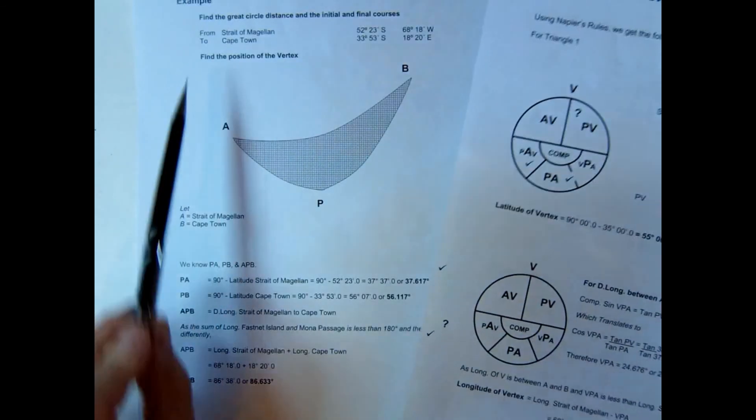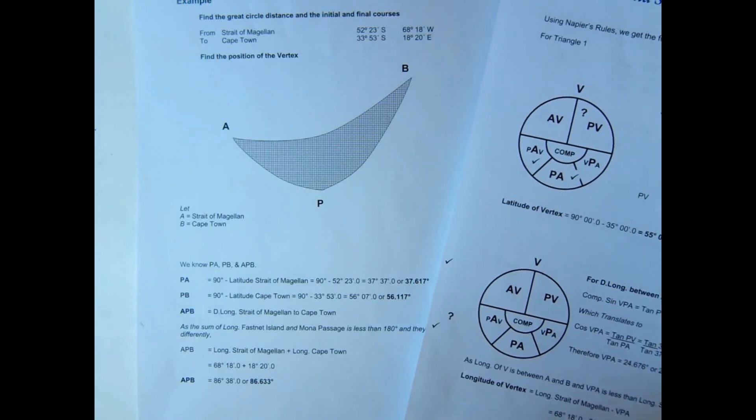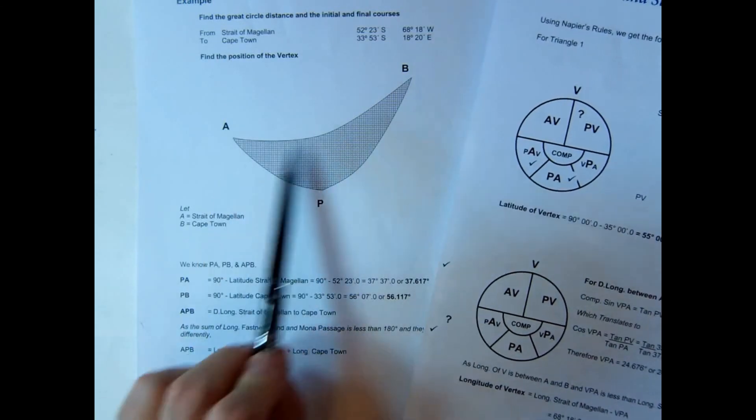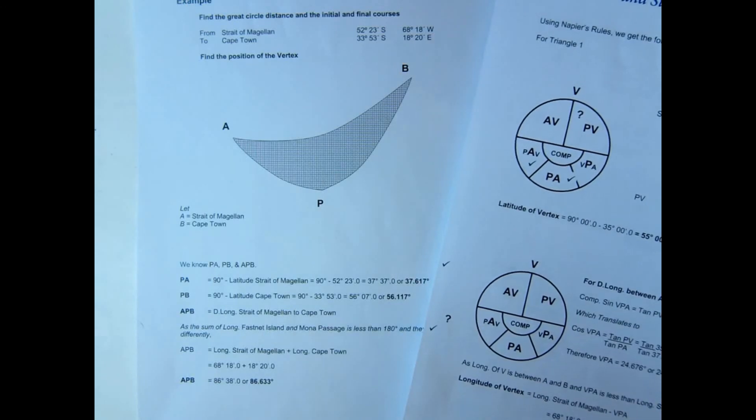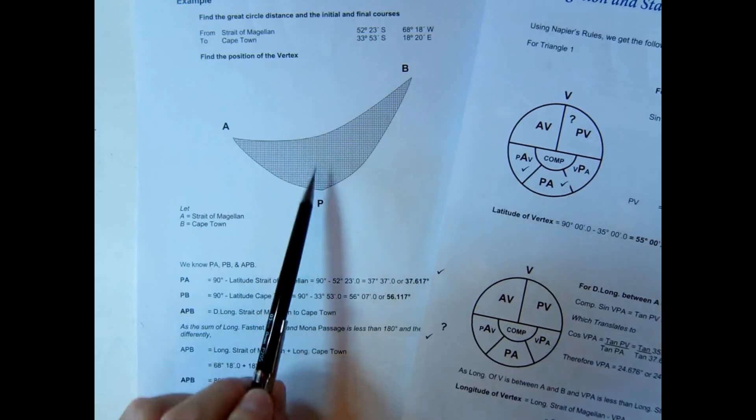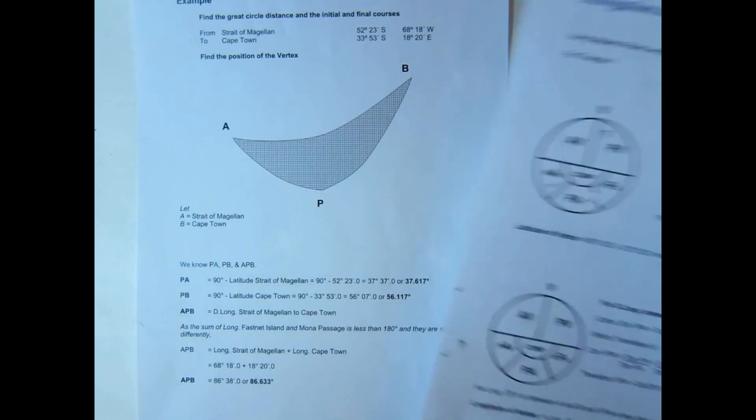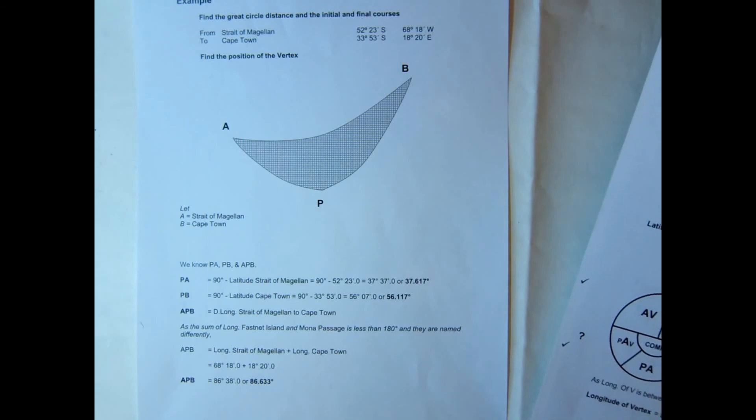Once you've got those two values, you can always look at your initial positions and relate the position of the vertex to the great circle course, and then you'll be able to see that the values you've obtained are putting the vertex between your courses A and B. So that's a way you could just have a quick check to see you've done the correct thing.